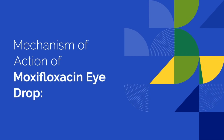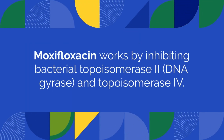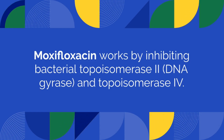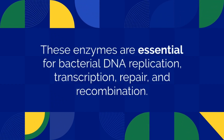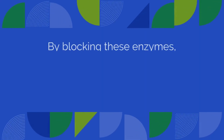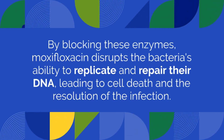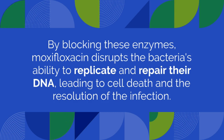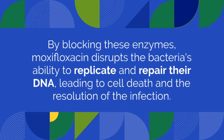Mechanism of action of moxifloxacin eyedrop. Moxifloxacin works by inhibiting bacterial topoisomerase 2 and topoisomerase 4. These enzymes are essential for bacterial DNA replication, transcription, repair, and recombination. By blocking these enzymes, moxifloxacin disrupts the bacteria's ability to replicate and repair their DNA, leading to cell death and the resolution of the infection.